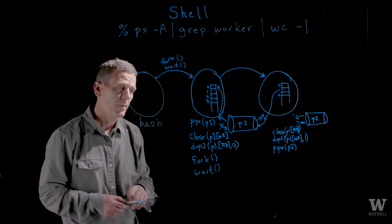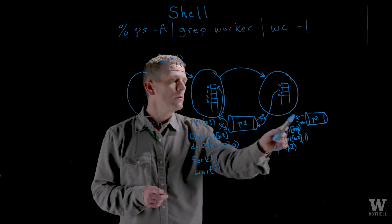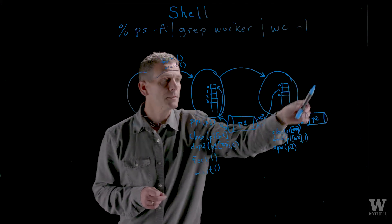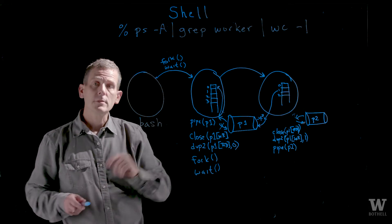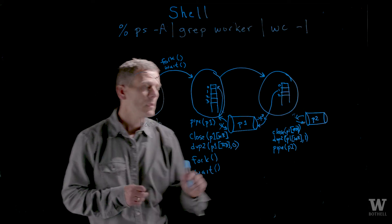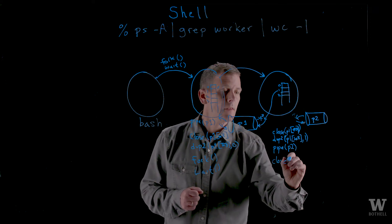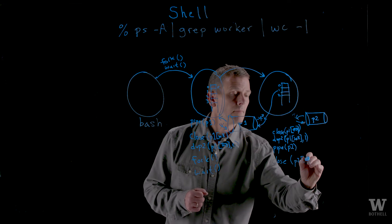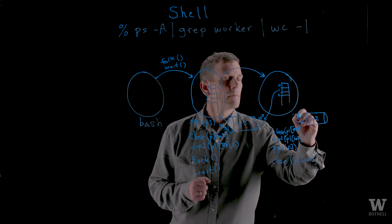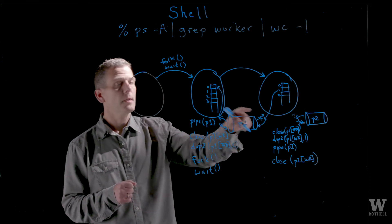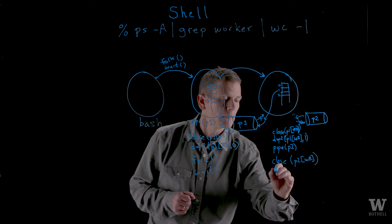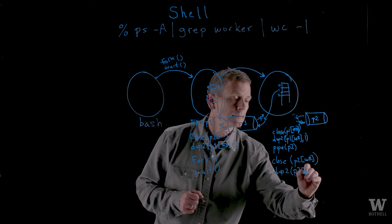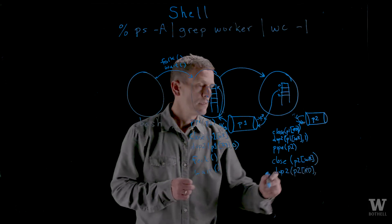Now I create another pipe, pipe two. What I'm going to use this pipe for is to take the standard out of a third process into the standard in. So we're going to write code very similar to what we did before. I will close the right side of the pipe, of p2, and I will dupe the read side of the pipe over to my standard in. Dupe two, the read side of this pipe, pipe two, to my standard in.